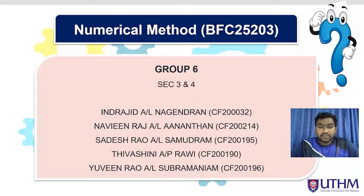Greetings of the day. My name is Naveen Roshanathan. My metric number is CF200214 and I'm from section 4. We are from group 6 from section 3 and section 4. Let me introduce our group members.